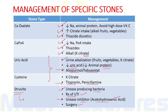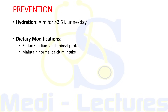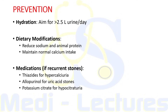Prevention is the best treatment especially for patients with recurrent stones. We must ask the patient for enough hydration — aim for more than 2.5 liters of urine per day — and specific dietary modifications like reducing sodium and animal protein and maintaining normal calcium intake. There is no role of decreasing calcium intake in the diet. Medications are required for recurrent stones: thiazides for hypercalciuria, allopurinol for uric acid, and potassium citrate for hypocitraturia.